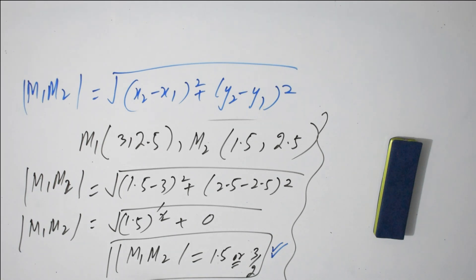I hope students this question number 4 is also clear to you. You have to find midpoint formula M1 and M2 and then distance between them. It's very simple. Take care, Allah hafiz.